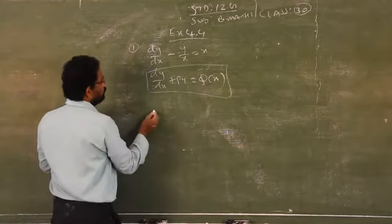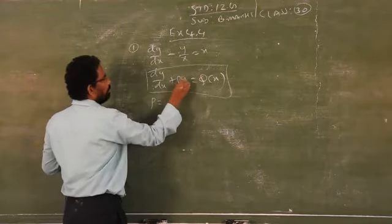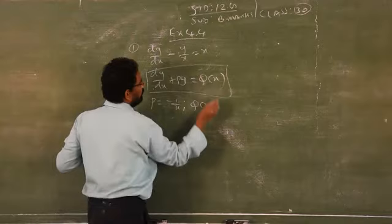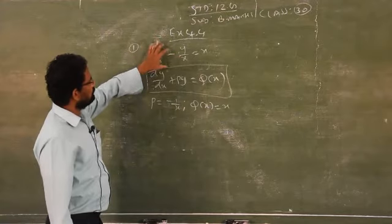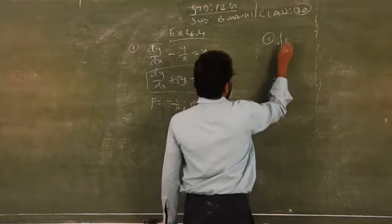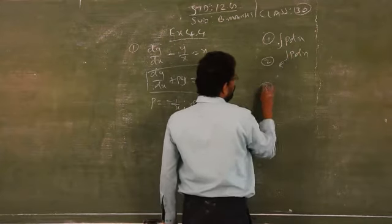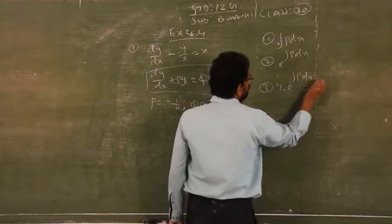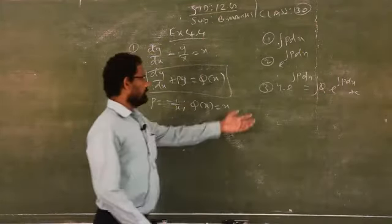The general format is: dy/dx plus P·y = Q(x). You have to identify this format. Compare the given question with the general format. P is the coefficient of y. What is the coefficient of y? Minus 1/x. What is Q(x)? The right side, that is x. First, find the integration of P·dx. Next, find e^(∫P dx). And the third step — final stage: y·e^(∫P dx) = ∫Q·e^(∫P dx) dx plus c.